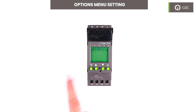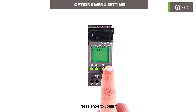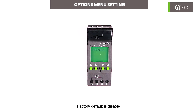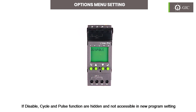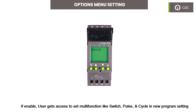Press the ESC key, then press the down key for 'Multi-function' and press enter to confirm. The factory default is disabled. When disabled, cycle and pulse functions are hidden and not accessible in the new program setting. Enable it using the up or down key and press enter to confirm. When enabled, the user gets access to multi-function settings like switch, pulse, and cycle in the new program setting.